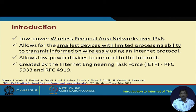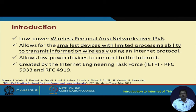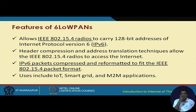6LoWPAN helps establish connectivity in these kinds of networks. It allows low power devices to connect over the internet because IPv6 is used for addressing at the network layer. That is why this protocol is useful for connecting IoT low power devices to the internet. It was created from IoT RFC 5933 and RFC 4911, and the specification is available in these RFCs.